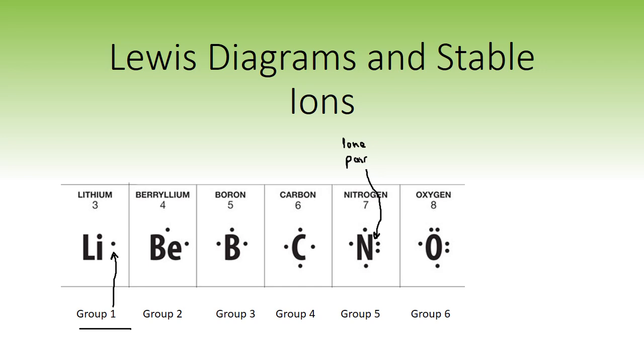Group 6 elements have two lone pairs, group 7 have three lone pairs, and group 8 have a full four lone pairs, which is considered very stable.